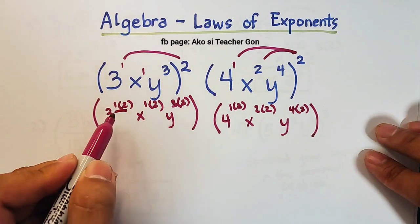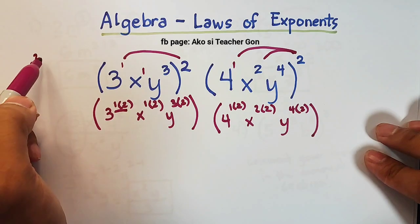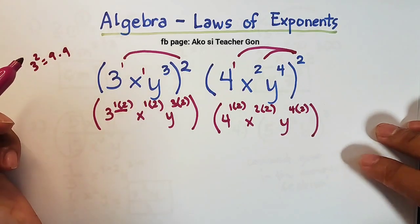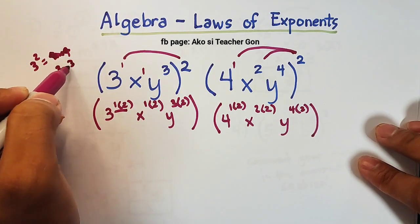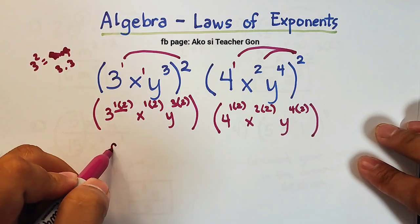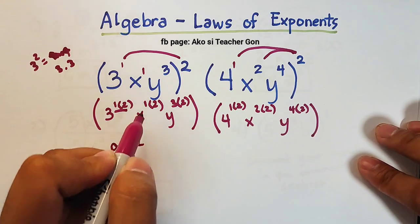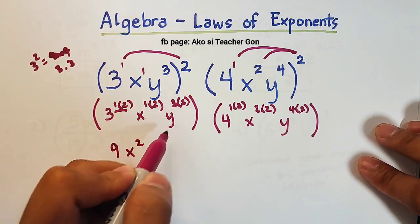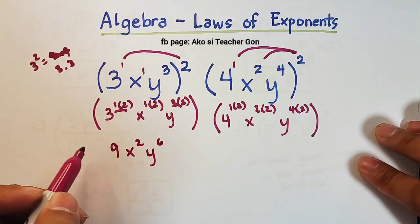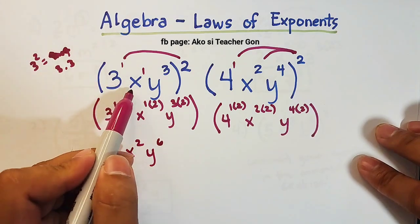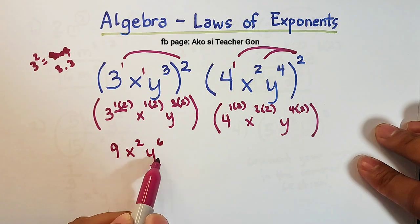When we simplify the first part: 3 squared is 3 times 3, which gives 9. For the x variable, that is 1 times 2, so x squared. For the y variable, 3 times 2 equals 6. So the simplified form of 3xy cubed squared is 9x squared y raised to the 6th.